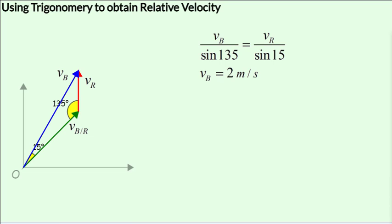And we obtain the velocity of the blue ball, V_B, as 2 meters per second, making an angle of 45 plus 15, or 60 degrees with the x-axis.